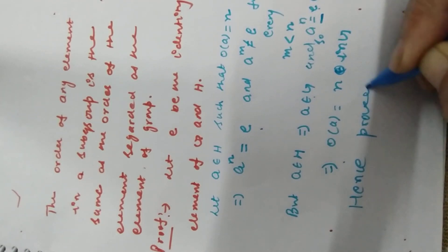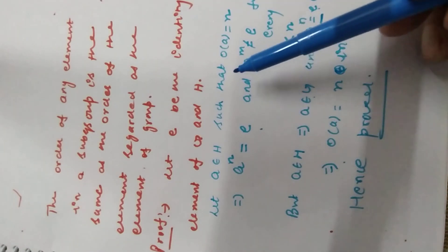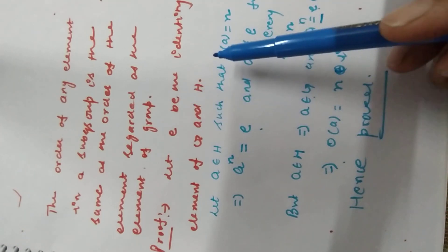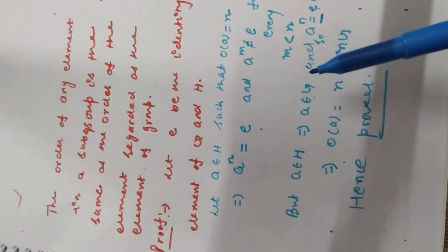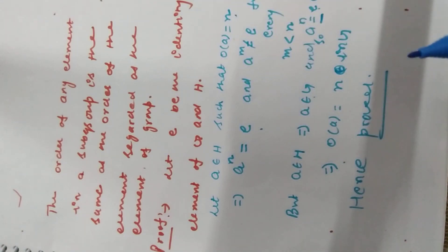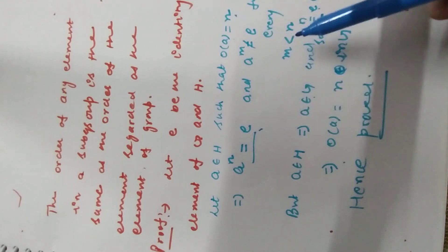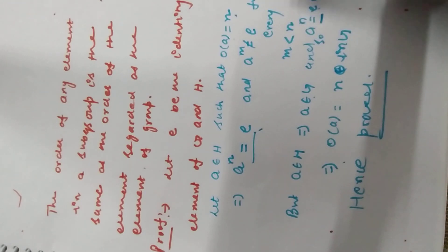Main phir se aapko samjhati hoon agar thoda sa bhi confusion hai. Is mein kya karte hain? Order jo hai kisi element ka jo subgroup mein hai — order ki definition bolti hai ki jitne bhi m, n se chhote honge, unke liye a raised to power m identity element nahi hota hai.